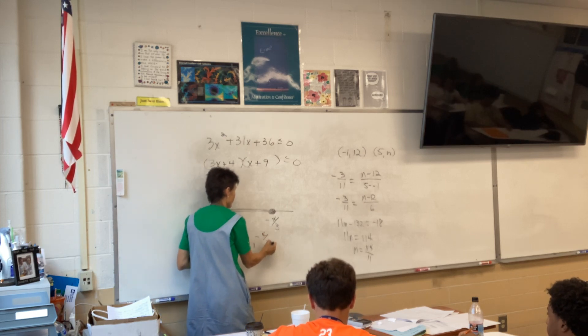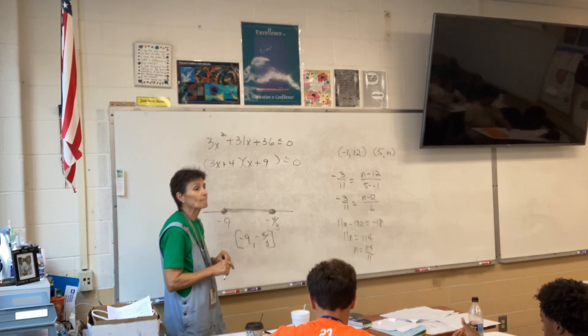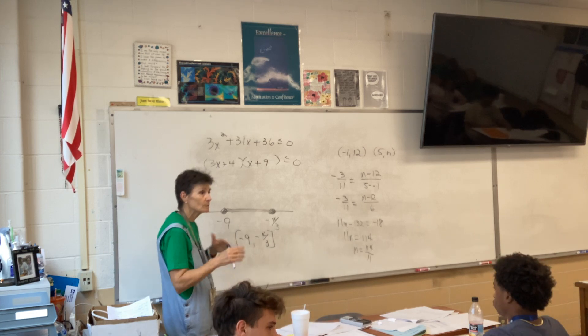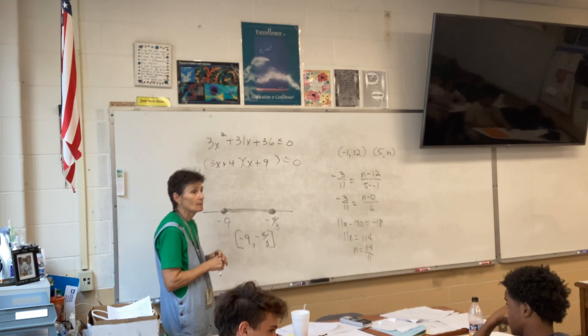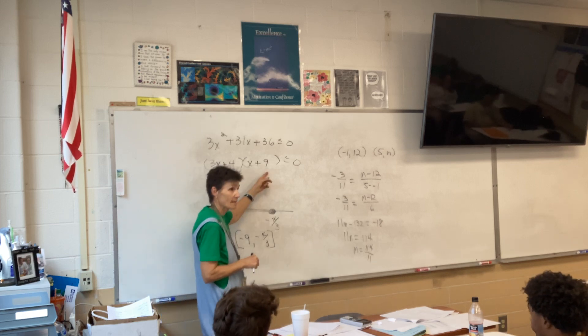So, my answer is negative 9 to negative 4 thirds. Wouldn't it be? Mm-hmm. Oh, wait. Hold on. This checks. That checks. That's the right factoring. Oh, good. Yeah.